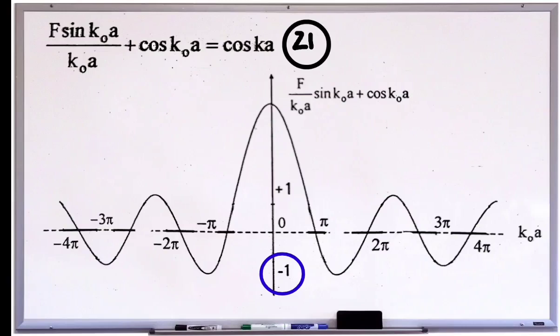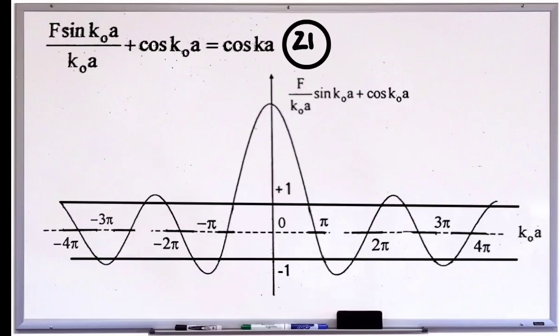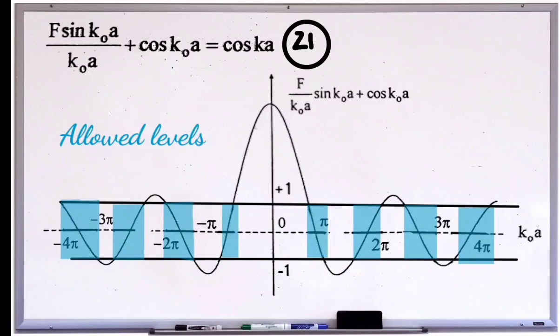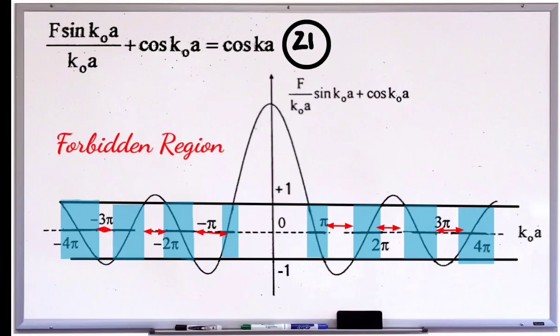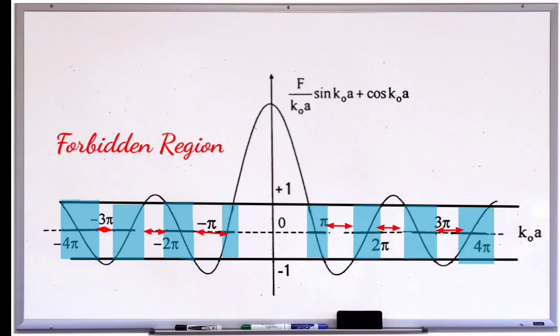So the point is that the values between plus 1 and minus 1 are the valid points according to this equation. Please check the figure. This is plus 1 and minus 1 levels. So the acceptable values of the function are between plus 1 and minus 1. So these are the allowed regions with respect to the k₀a.